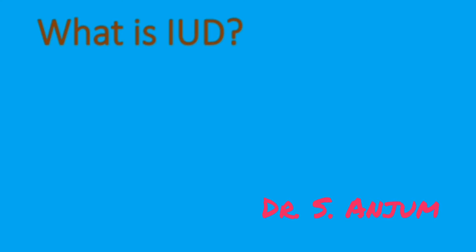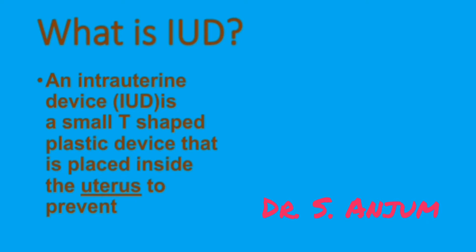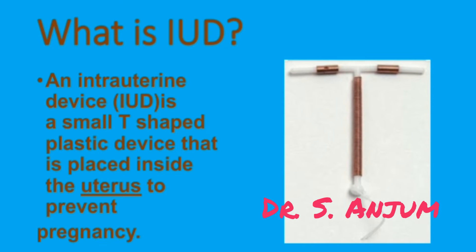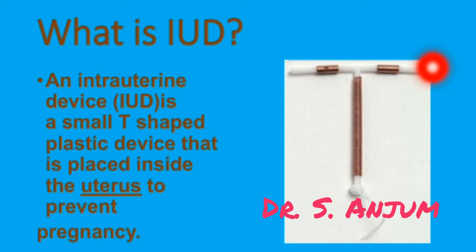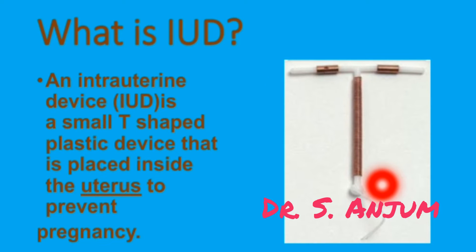What is IUD? An intrauterine device or IUD is a small T-shaped plastic device that is placed inside the uterus to prevent pregnancy. You can see in the picture it is T-shaped — this is the horizontal limb, this is the vertical limb, and this thread is the nylon thread.